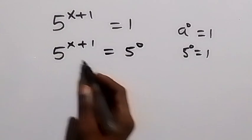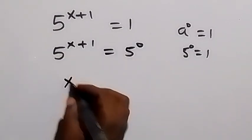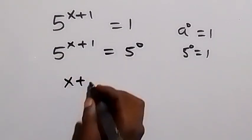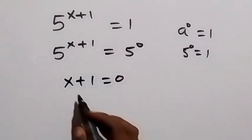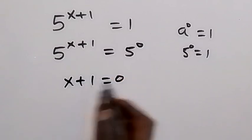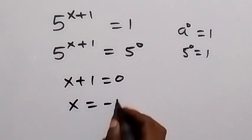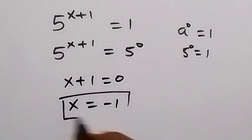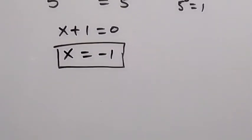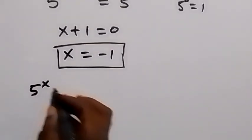From here we have the base the same, so we can equate the powers and we have x plus 1 is equal to 0. Then taking plus 1 to this side, x equals minus 1. So here we have the value of x in this problem.